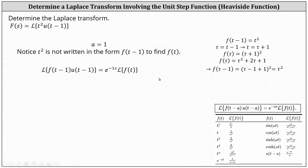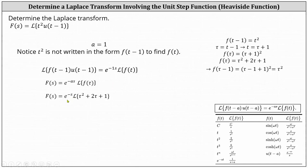This indicates the Laplace transform is equal to e to the power of negative a s times the Laplace transform of f of tau. Since a is equal to one and f of tau is equal to tau squared plus two tau plus one, we have the Laplace transform equal to e to the power of negative s times the Laplace transform of tau squared plus two tau plus one.